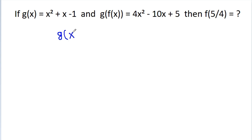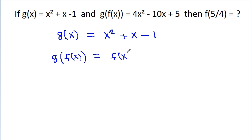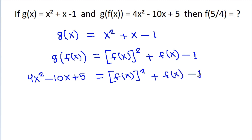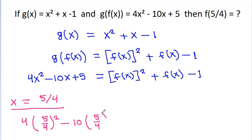We have given that g(x) is equal to x squared minus x minus 1, so g(f(x)) will be equal to f(x) squared minus f(x) minus 1. We have given g(f(x)) is equal to 4x squared minus 10x minus 5, that is equal to f(x) squared minus f(x) minus 1. If we put x equal to 5/4, then we will get 4 times (5/4) squared minus 10 times (5/4) minus 5 is equal to f(5/4) squared minus f(5/4) minus 1.